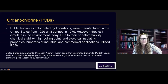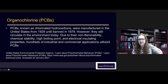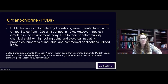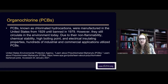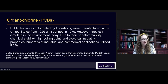PCBs — known as chlorinated hydrocarbons — were manufactured in the United States from 1929 until they were banned in 1979. However, they still circulate in the environment today due to their non-flammability, chemical stability, high boiling point, and electrical insulating properties. Hundreds of industrial and commercial applications utilized PCBs. A lot of PCB-type exposure comes through house dust — coming off electronics and construction materials. It's really important to have air purifiers and take care of house dust.